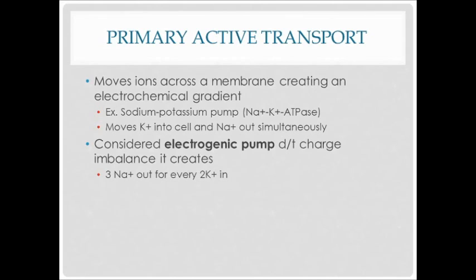In primary active transport, we're using energy to move ions and molecules across the plasma membrane. It's creating the electrochemical gradient as potassium moves into the cell and sodium moves out simultaneously, so it's considered an electrogenic pump because of that charge imbalance — three sodium are going out for every two potassium in. This is called the sodium-potassium pump, sometimes called the sodium-potassium ATPase pump.